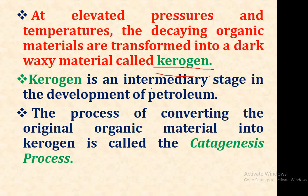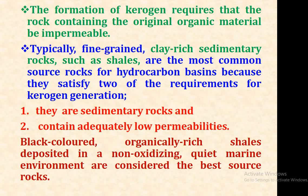Kerogen is an intermediary in the development of petroleum, and the process of converting the original organic material into kerogen is called catagenesis. The formation of kerogen requires that the rock containing the original organic material be impermeable. Typically, fine-grained, clay-rich sedimentary rocks such as shale are the most common source rocks for hydrocarbon basins, because they are sedimentary rocks and have adequately low permeabilities.